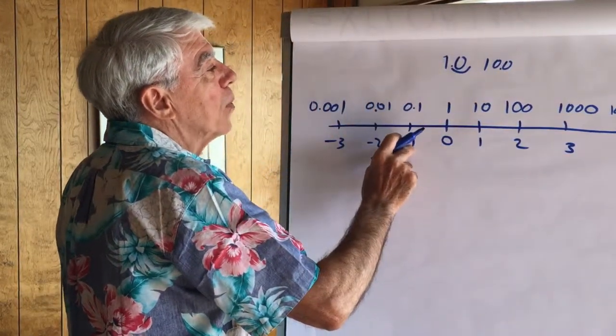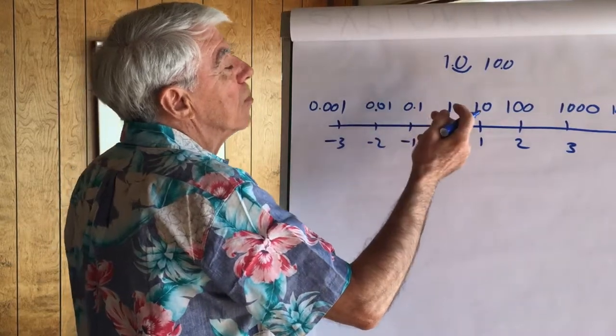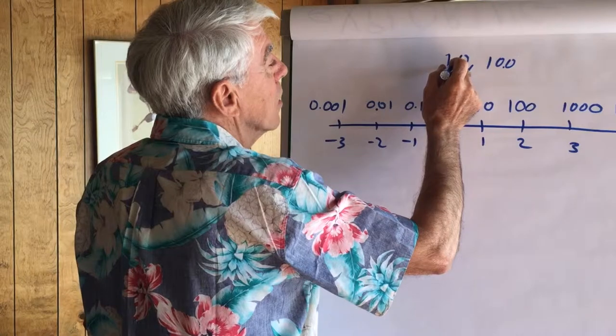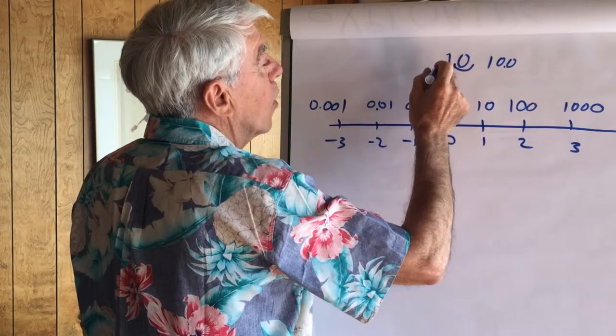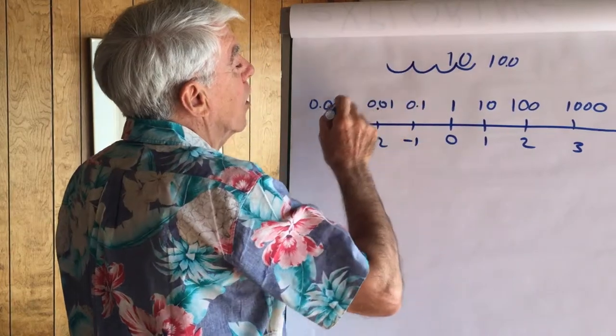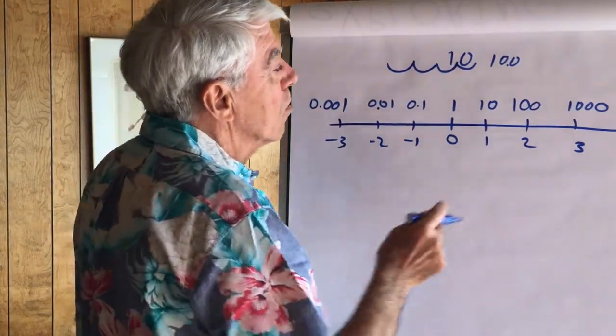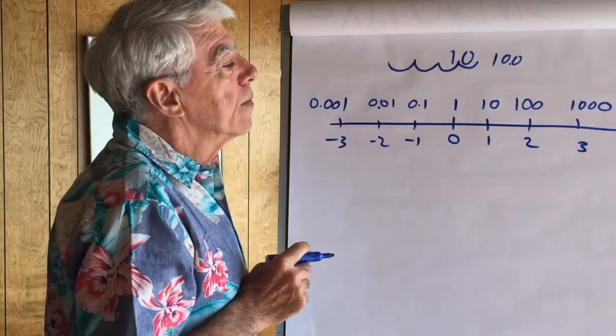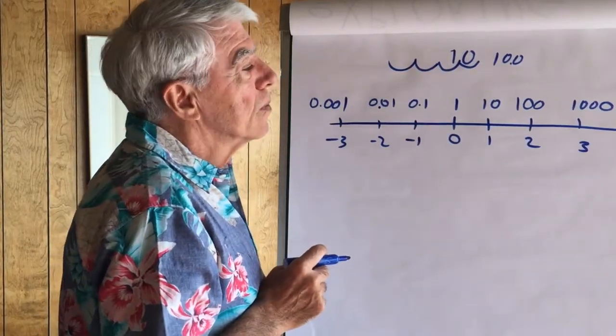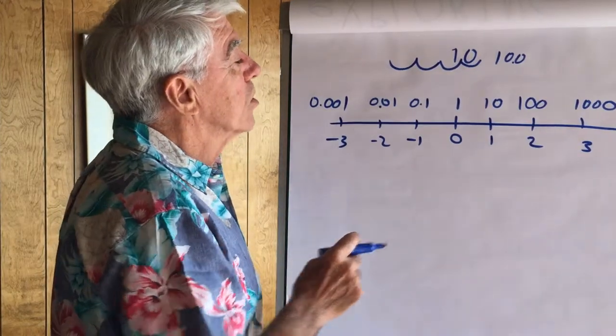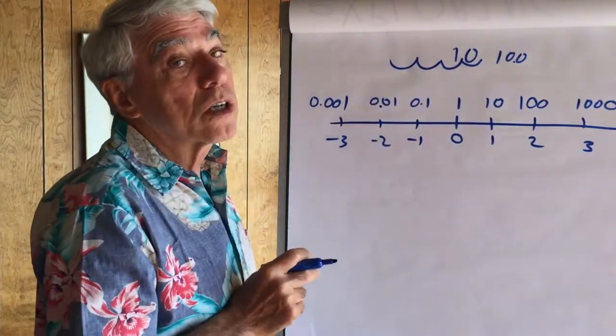And on the negative exponent, it means move the decimal point to the left. So, here we move it one place, two places, three places. So, remember that. The number line shows clearly that we just can't say the exponent tells you how many zeros to add because it's not quite true. Point 1 has no zeros.